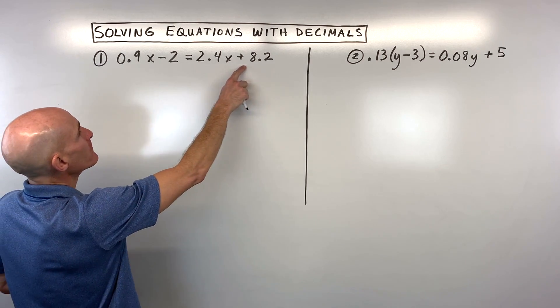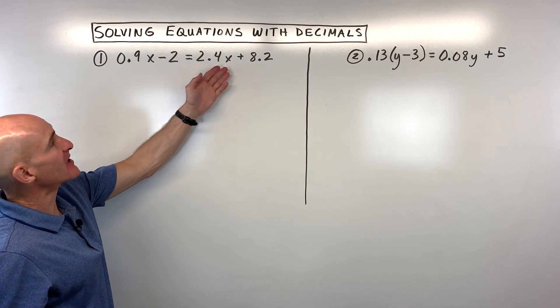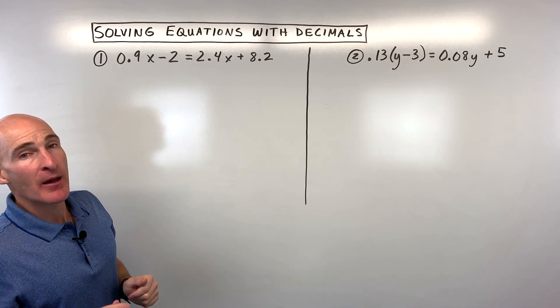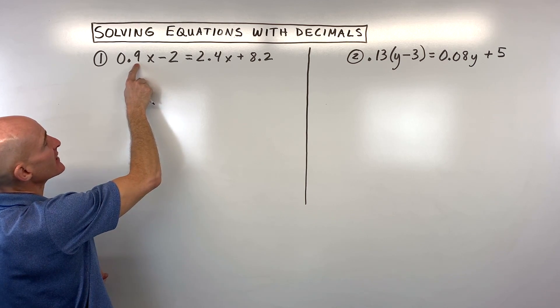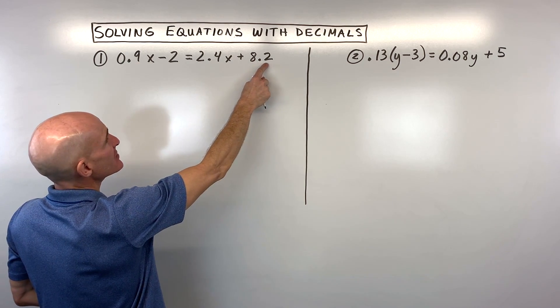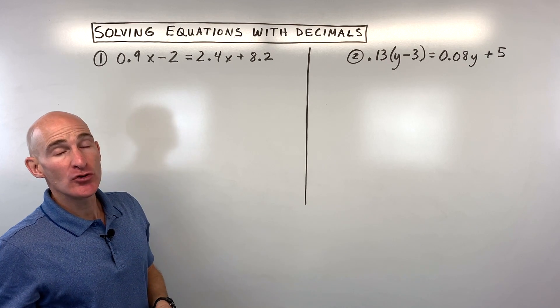For this first example, what you might notice is that there's a lot of decimals in this equation. Another thing you might notice is that there's really only one decimal place. See how this is like nine tenths and four tenths and two tenths.